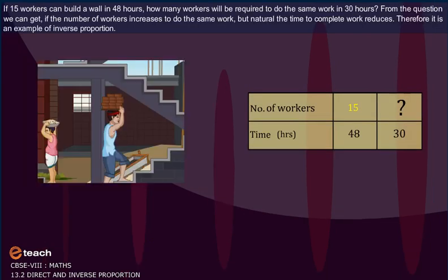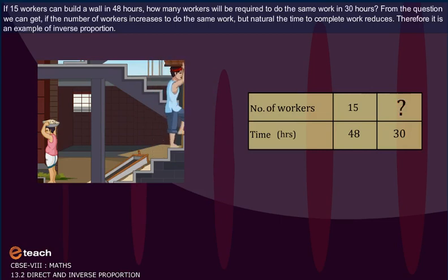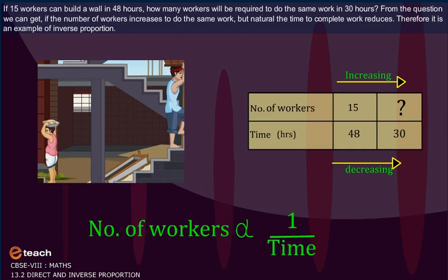If 15 workers can build a wall in 48 hours, how many workers will be required to do the same work in 30 hours? From the question we can get, if the number of workers increases to do the same work, but naturally the time to complete work reduces. Therefore, it is an example of inverse proportion.